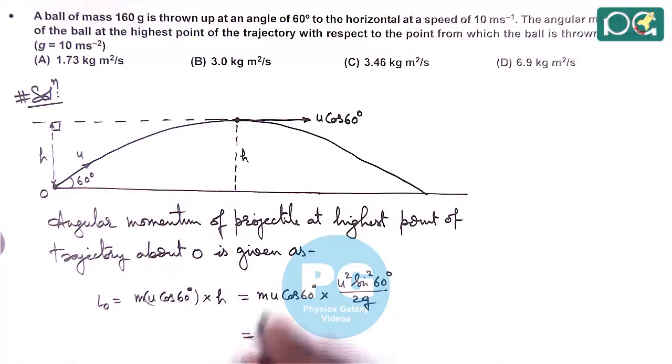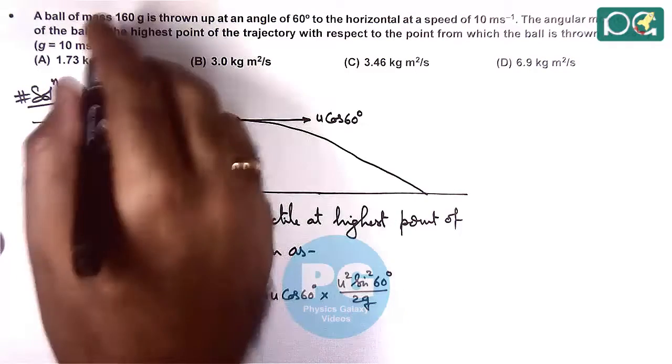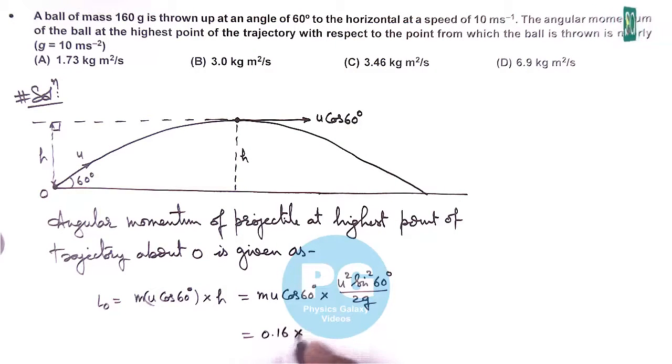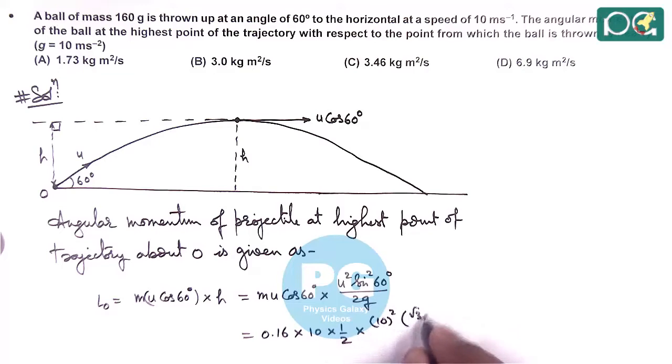If we substitute the numerical values, here mass is 160 gram. This is 0.16. Speed is 10. Cos 60 is 1 by 2 multiplied by u square is 10 square, sine square 60 is root 3 by 2 whole square divided by 2g, g is again 10.